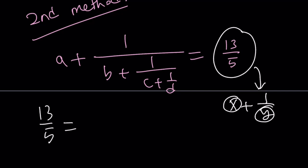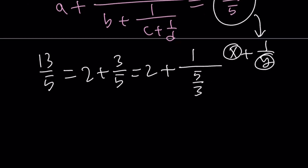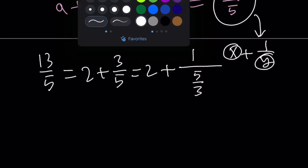13 over 5 can be broken down into an integer, like mixed numbers. This is equal to 2 plus 3 over 5. And here's the trick. We have a 1 in the numerator, so we're going to use the reciprocal of 3 fifths, which is 5 thirds. 3 fifths is the same as 1 over 5 thirds. And then we're going to take 5 thirds and break it down.